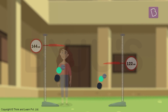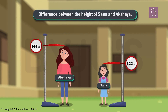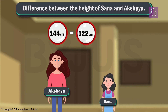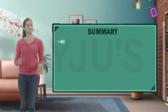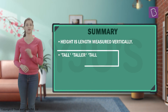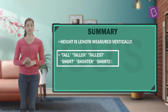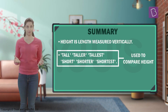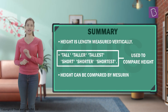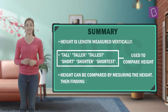Similarly, we can find the difference between the heights of Sana and Akshaya, which will be 144 centimeters minus 122 centimeters, equals 22 centimeters. So, measuring the height of any object is nothing but measuring the length of the object vertically. The words tall, taller, tallest, or short, shorter, and shortest are used when heights of two or more objects are compared, and all of them are relative. We can find out how much taller or shorter something is than another by measuring their heights and finding the difference.